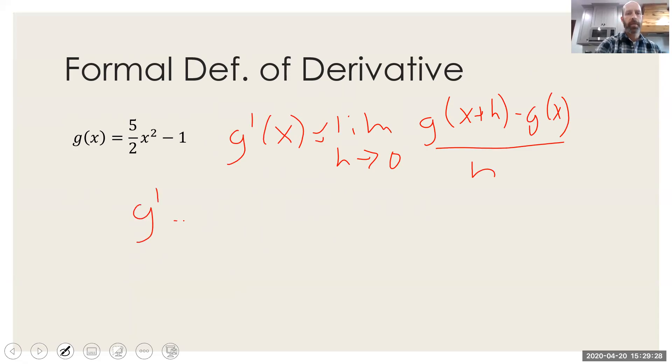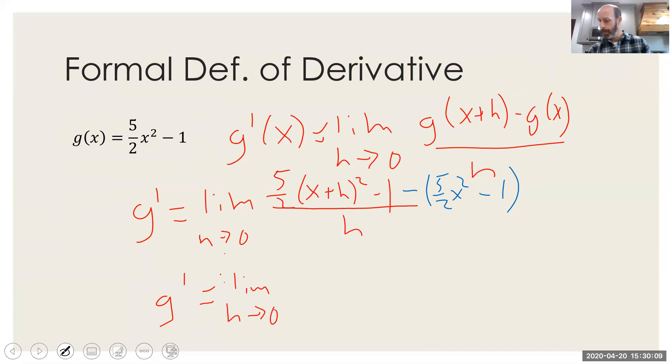So to find g prime here, we're just going to do a substitution as h goes to zero. So we're going to have on the numerator five over two times x plus h squared minus one. And then I'm going to minus g of x, so then I get a minus five halves x squared minus one. All of this is going to be over h. And after some work, you're going to find that this is going to give you the limit as h goes to zero of the quantity 2x plus h, which of course is 2x, which using the shortcuts would be the derivative.